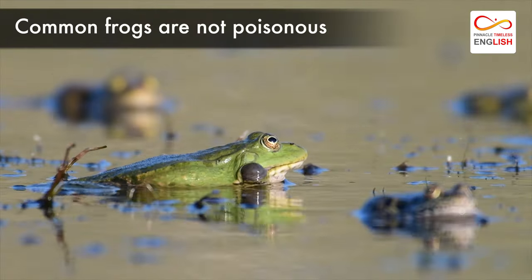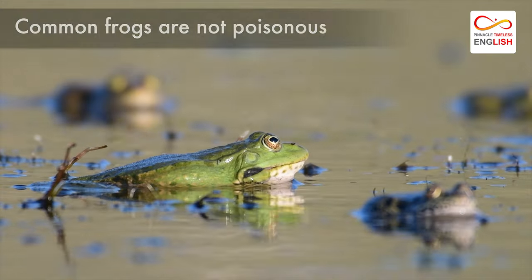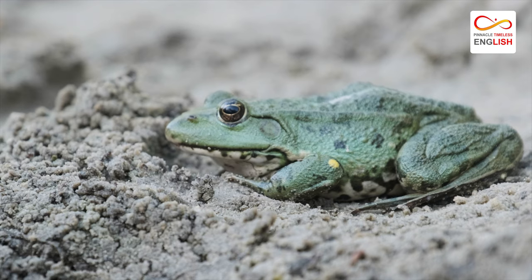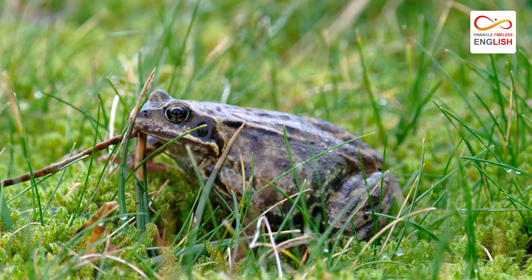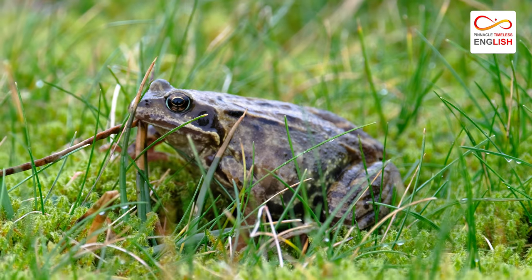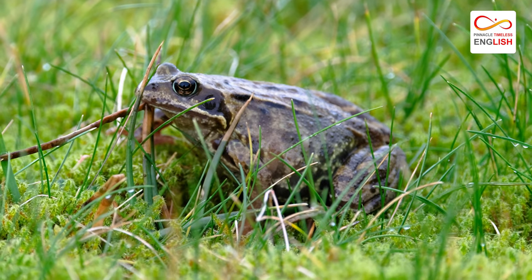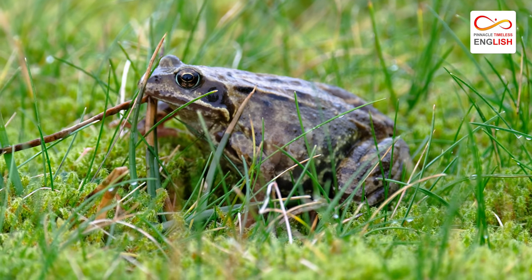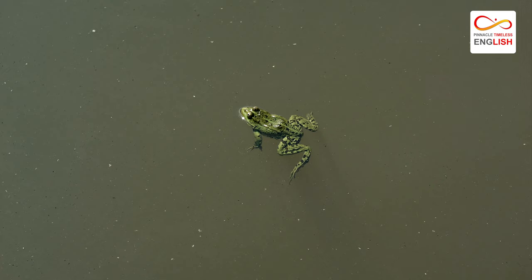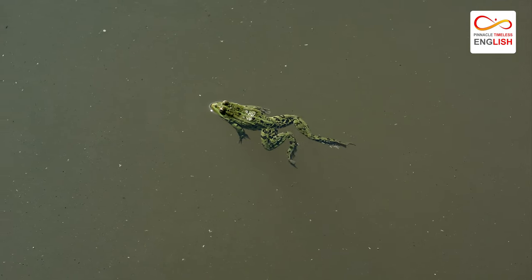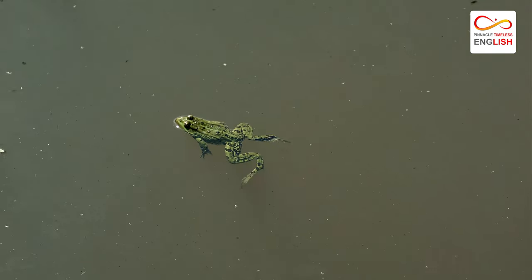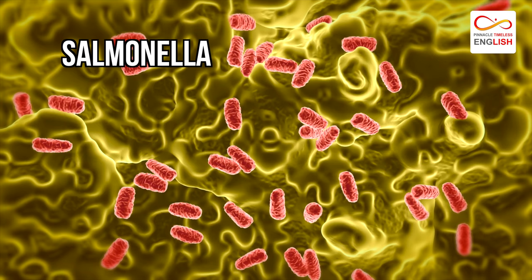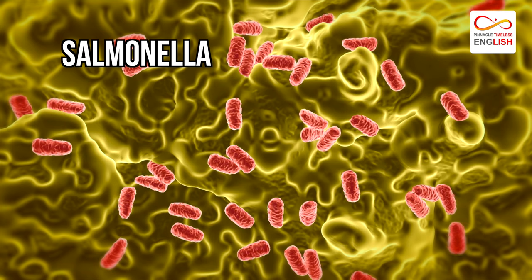Common frogs are not poisonous — they do not have the special poison glands found in some species in the Amazon. However, all frogs can carry viral or bacterial diseases such as salmonella.